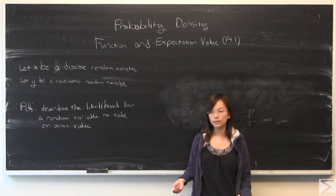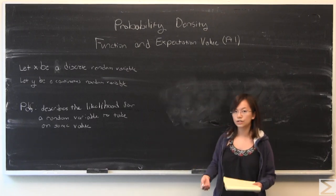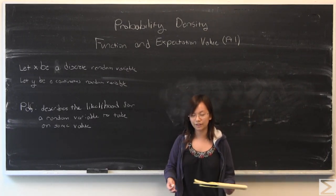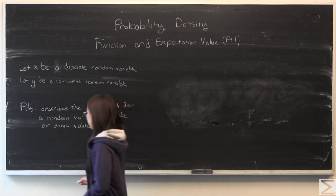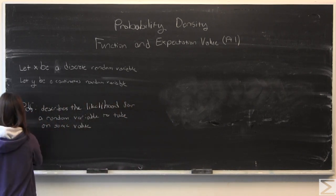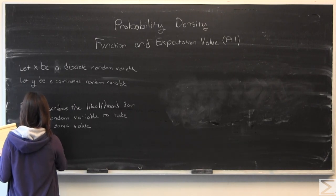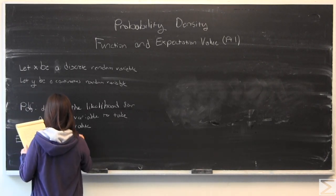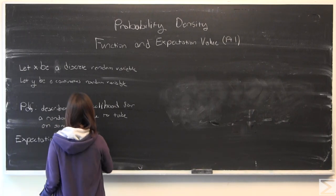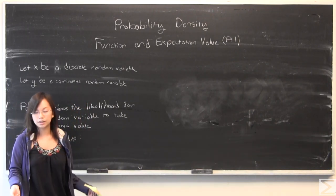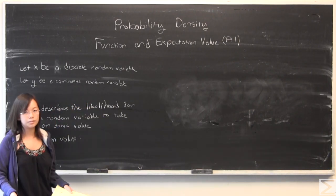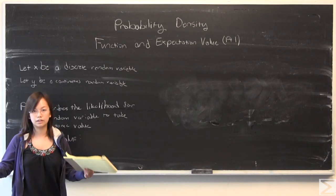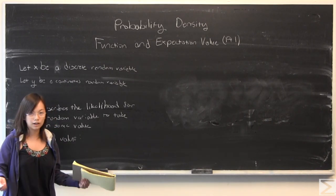Another reason why the probability density function is so important is because you can find an expectation value. An expectation value is basically what your intuition thinks it is. If you take an infinite number of trials with this random variable, the expectation value is going to be basically the arithmetic mean of all those trials.